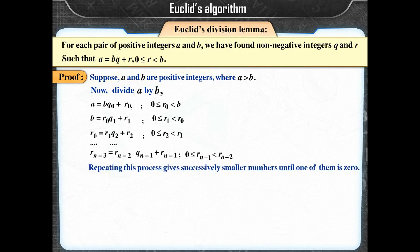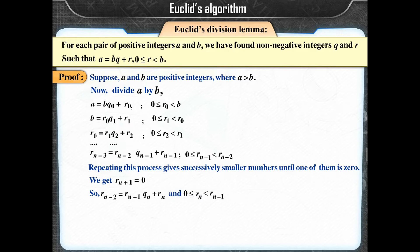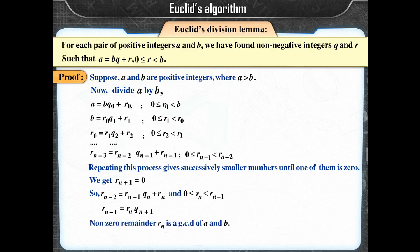Repeating this process gives successively smaller remainders until one of them is 0. We get Rn+1 = 0, so Rn−2 = Rn−1·Qn + Rn, where 0 ≤ Rn < Rn−1. Then Rn−1 = Rn·Qn+1. The last non-zero remainder Rn is the GCD of A and B.